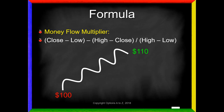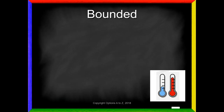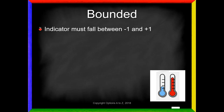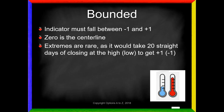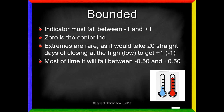So remember: if the stock price is halfway between the high and the low, the money flow multiplier is 0. If you're at the high, the multiplier is 1. If you're at the low, it's negative 1. Like most oscillators we've seen, the Chaikin Money Flow is also bounded — it must fall somewhere between negative 1 and positive 1, with 0 as the center line. However, these extremes are rare; it would take 20 straight days of closing at the high to get plus 1. Most of the time, it falls between minus 0.30 and plus 0.30.